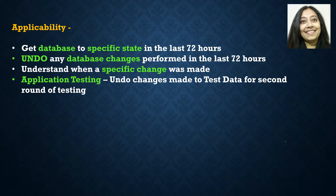Applicability: to get a database to a specific state in the last 72 hours — for example, going back to October 11th at 1 p.m., assuming the target backtrack was set to 72 hours. You can also undo any changes that were performed. If I was at 6 p.m. and I backtrack to 1 p.m. and bring it forward to 3 p.m., I effectively undo changes for the last three hours.